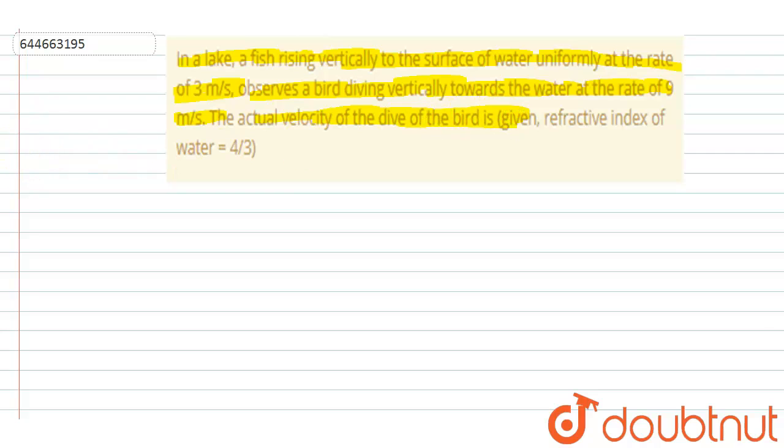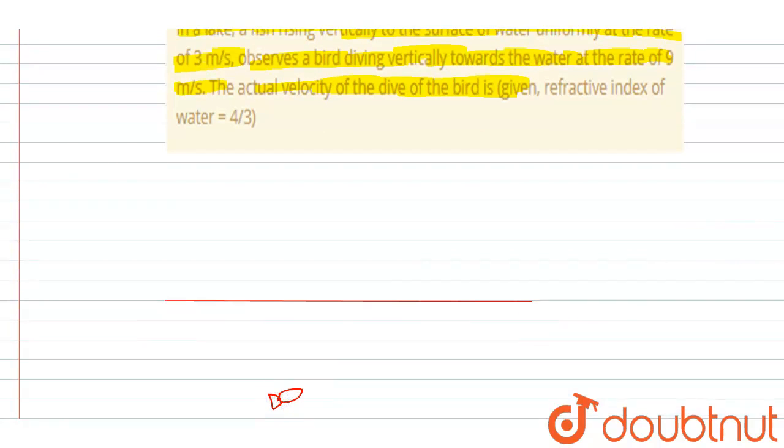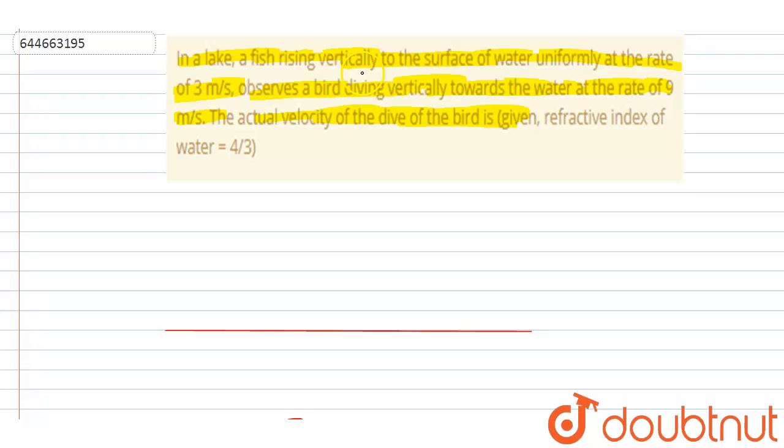So if I draw the diagram, let's say this is the surface. Below the surface, water is there, and inside the water there is a fish. It is said that the fish is moving upward. The fish is rising vertically with a velocity of 3 meters per second. So the motion of the fish is vertically upward with a velocity of 3 meters per second.